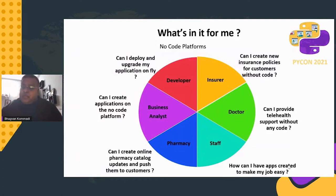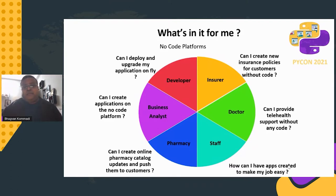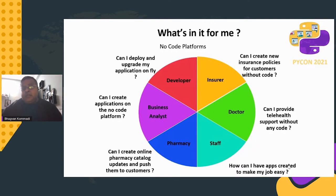As a Python developer, the question is: what's in it for me? The dream is: can I have a platform where code is generated, deployed, and upgraded on the fly? If you're an insurance company, can you create new insurance policies without code? If you're a doctor, can you provide technical support without code? Can a business analyst create applications — for pharmacies, hospitals, or insurance companies — without thinking about any technology stack?